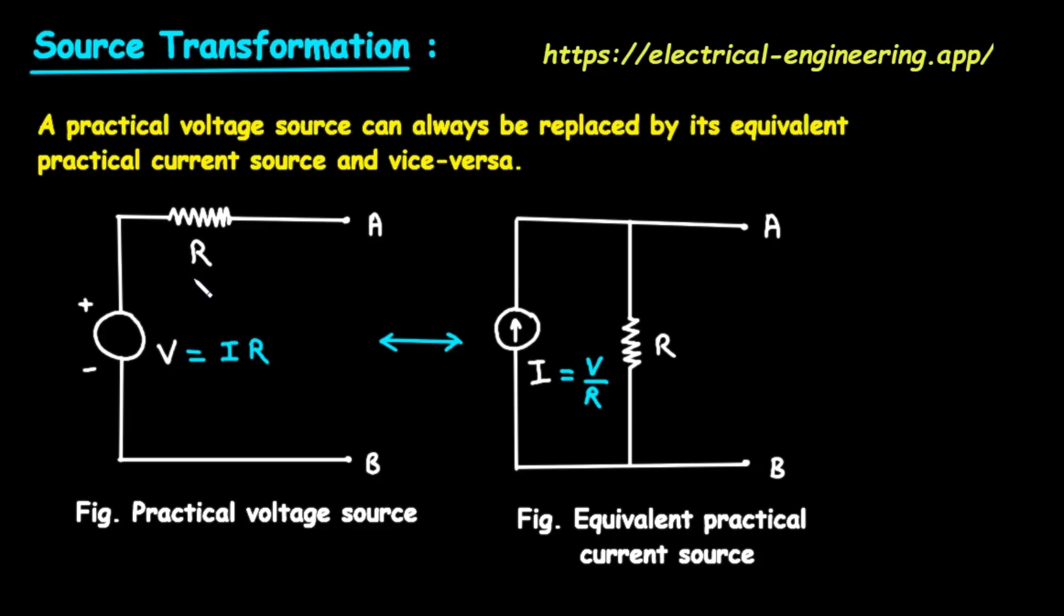So, a practical voltage source is simply an ideal voltage source V connected in series with a resistor R. The entire combination provides power to an external circuit through the two connection points, or terminals, labeled A and B.